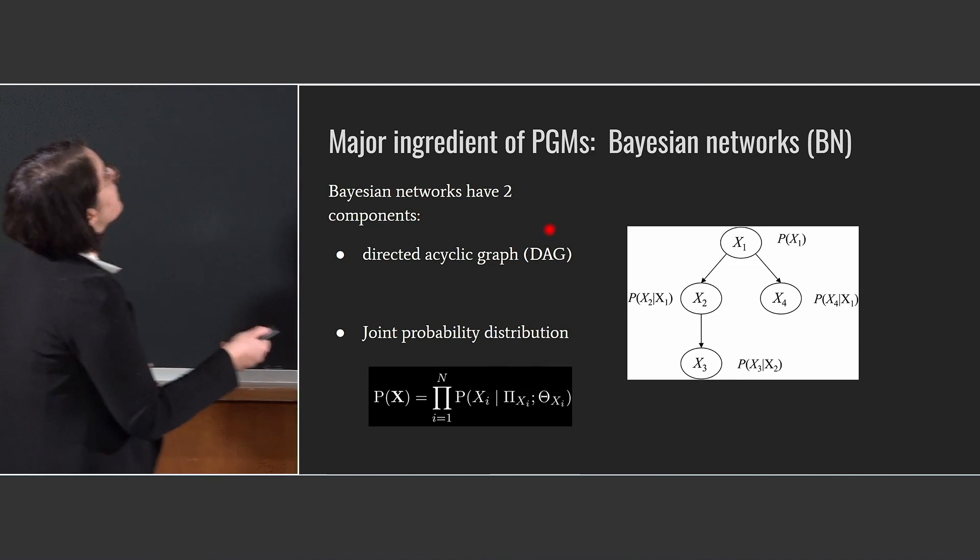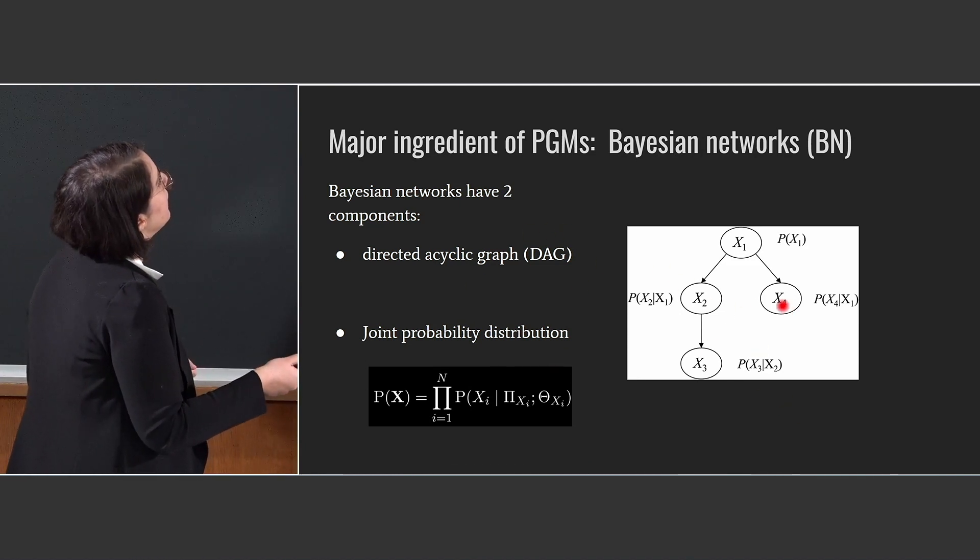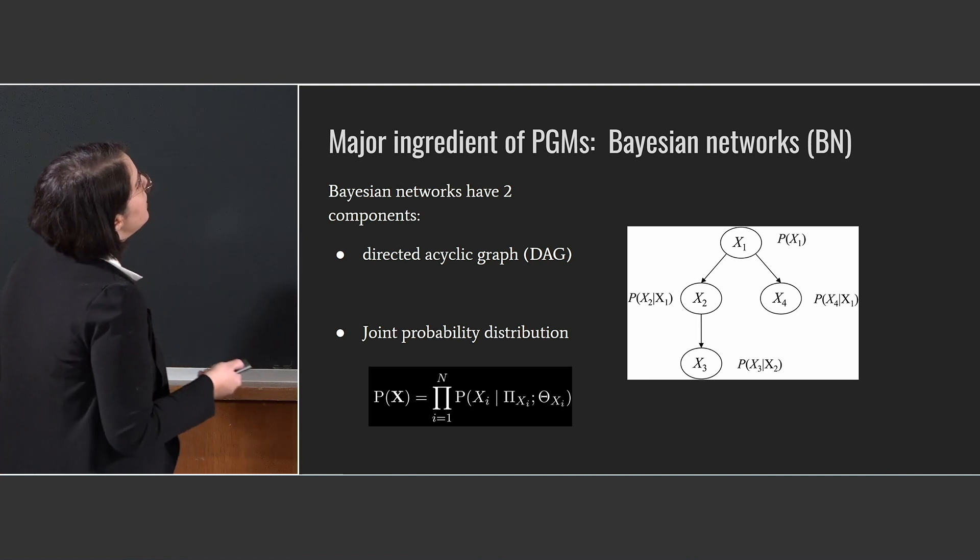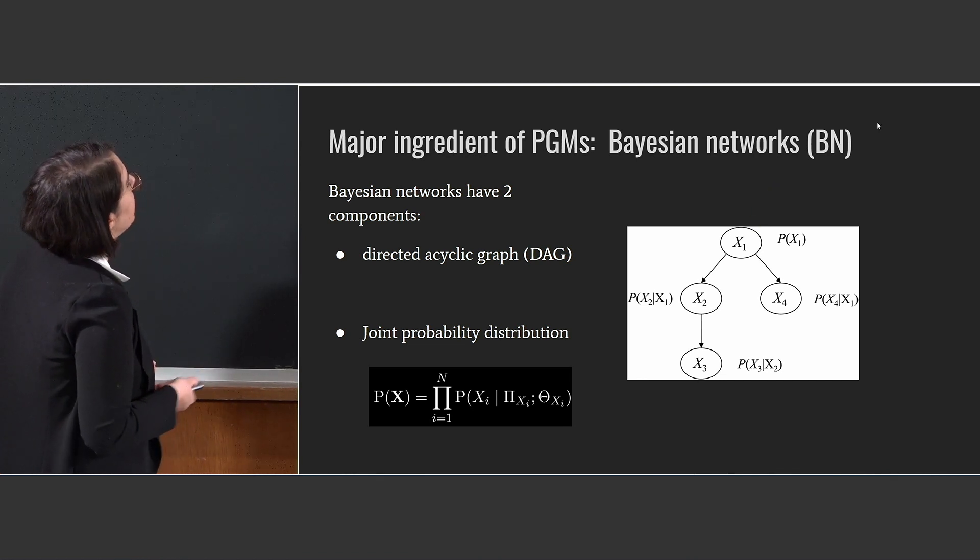So in this example, I have that x2 and x4 nodes have only the parent x1. So their probability distribution terms will depend only on x1.